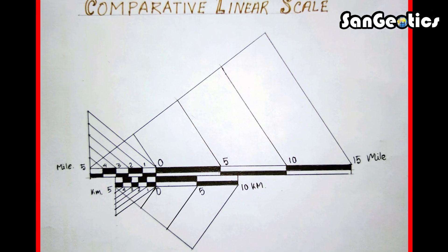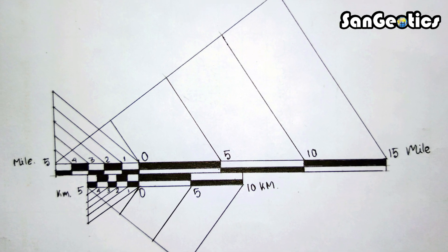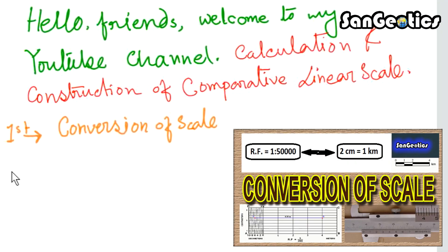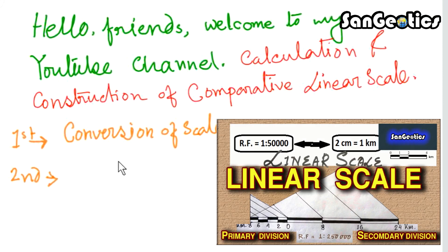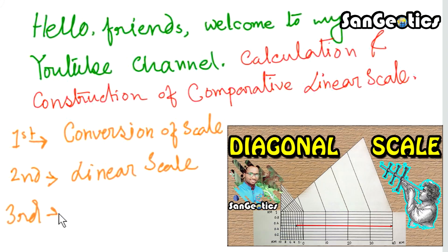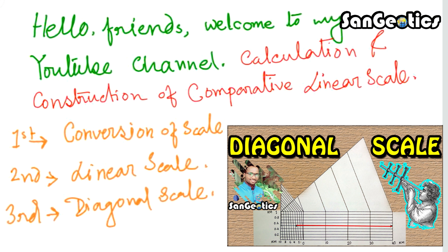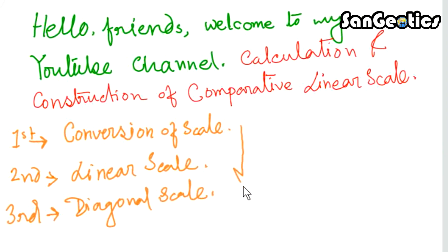This is the fourth lesson of the scale series. The first lesson discussed conversion of scale, the second discussed calculation and construction of linear scale, the third discussed calculation and construction of diagonal scale. Links to those lessons are provided in the description section.